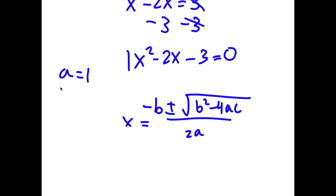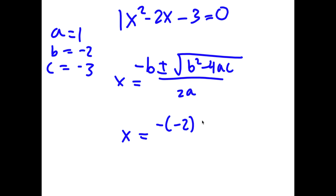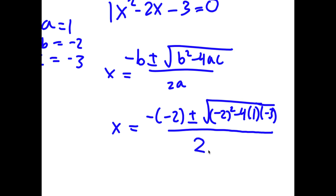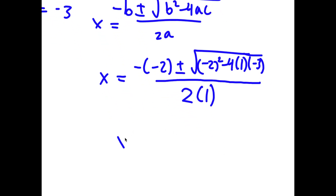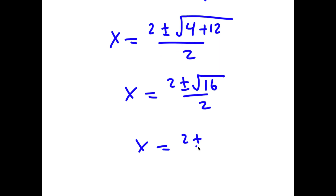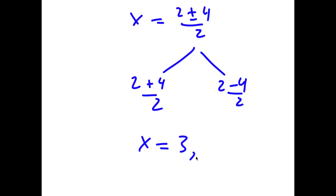So in this case, a is 1, b is negative 2, and c is negative 3. So I have x is equal to negative of negative 2 plus or minus the square root of negative 2 squared minus 4 times 1 times negative 3, all over 2 times 1. So now this is equal to 2 plus or minus the square root of 4 plus 12 over 2, which equals 2 plus or minus the square root of 16 over 2, which is 2 plus or minus 4 over 2. So I get x is equal to 3 or negative 1.